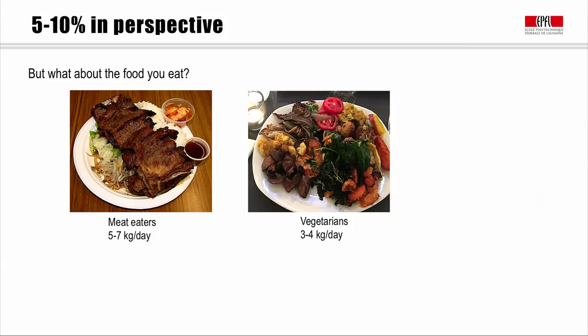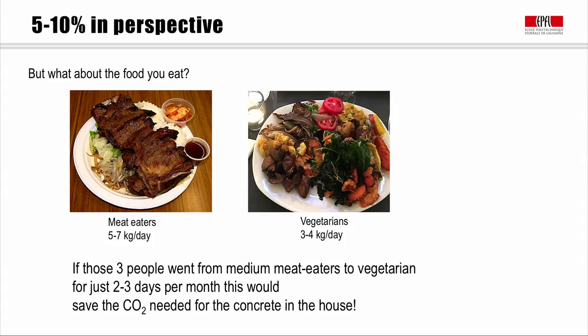We should also reflect on our other choices in life — for example, the food we eat. For a very meat-intensive diet, the associated CO2 production would be around 5 to 7 kilograms of CO2 per day, whereas a vegetarian diet is much lower at around 3 to 4 kilograms of CO2 per day. If the same imaginary family of three went from eating meat to being vegetarian for just two or three days a month, this would be equivalent to saving all the CO2 needed to build their house.